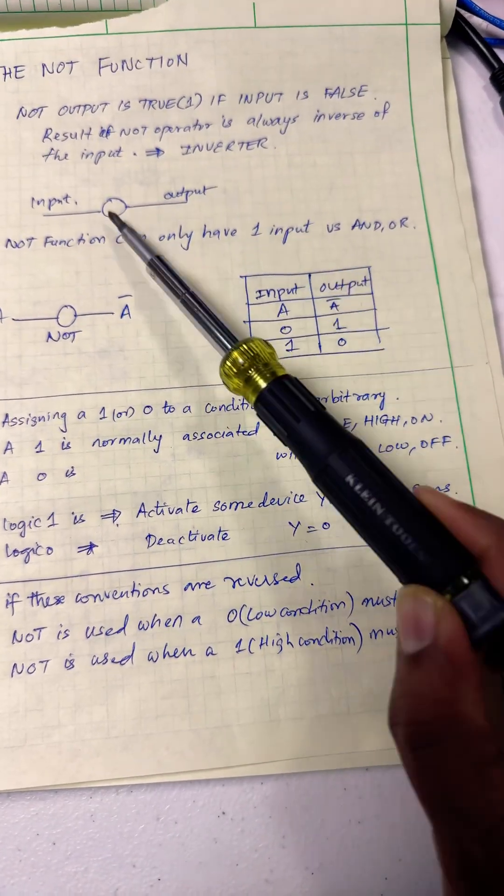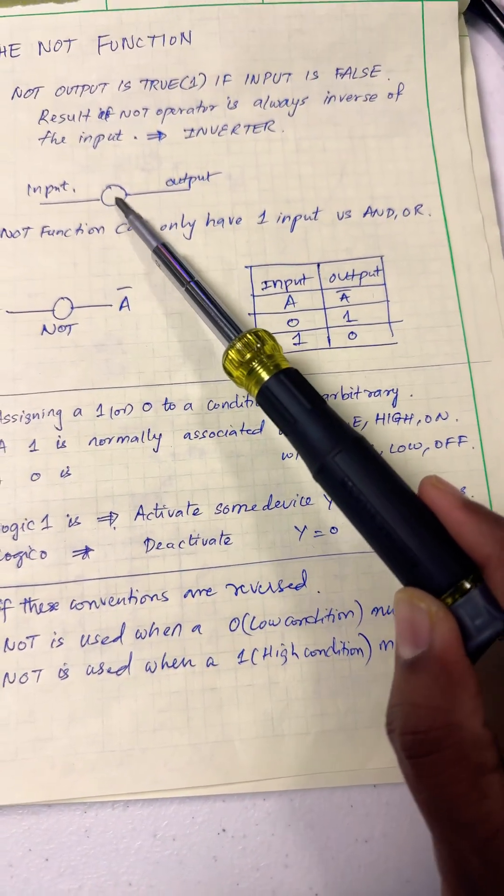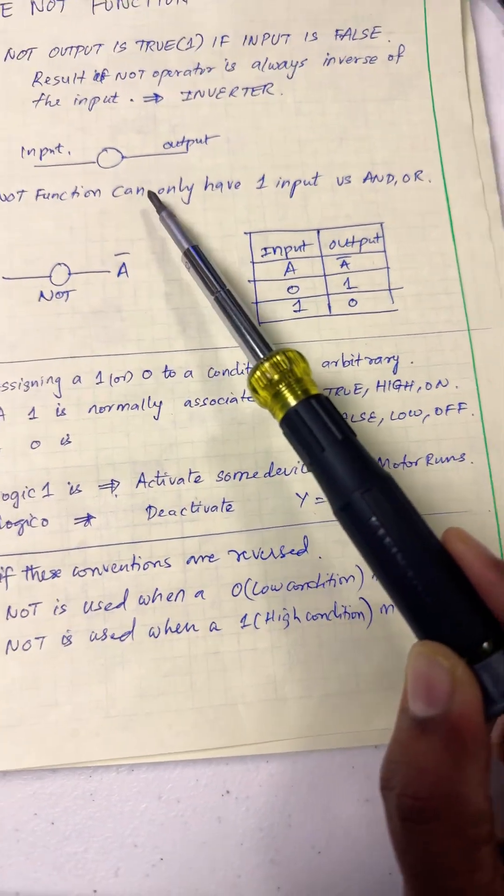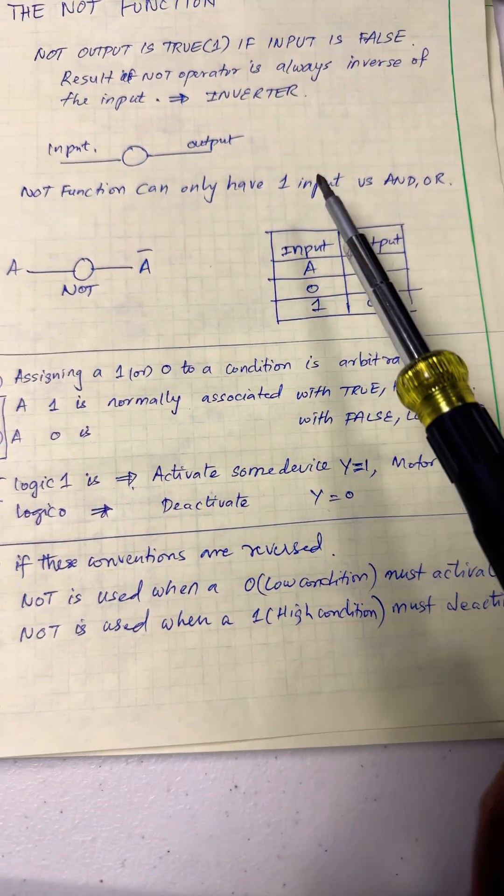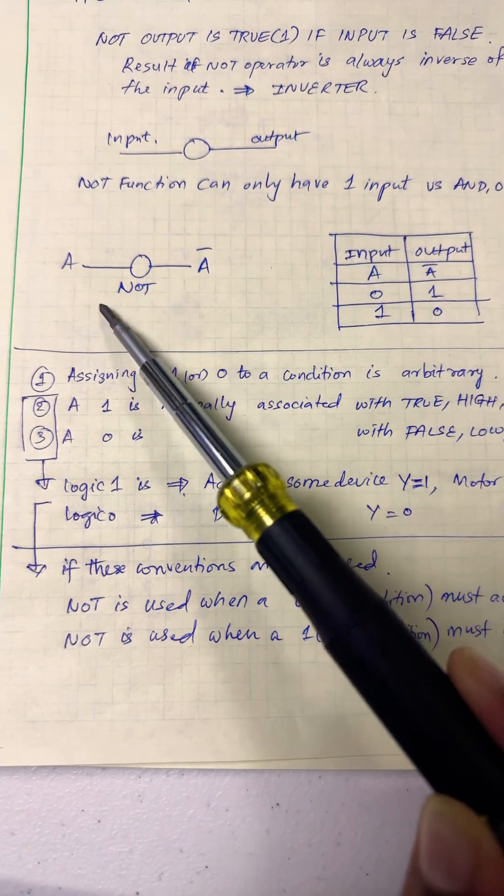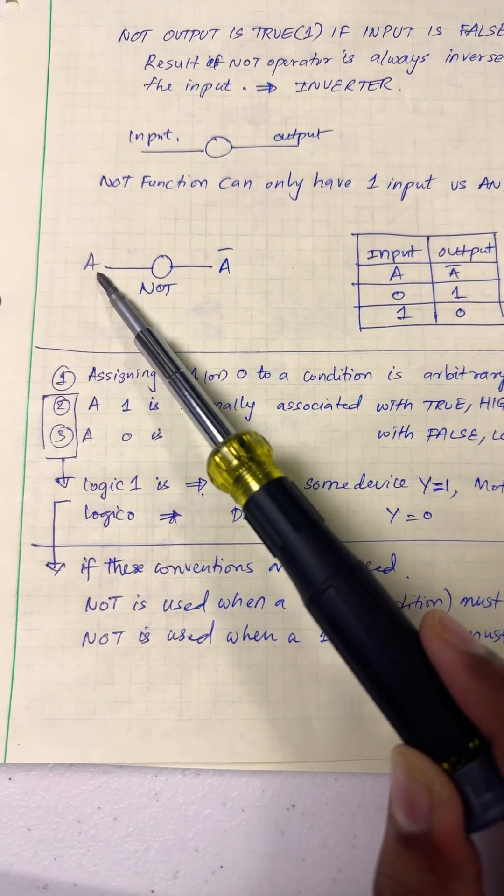The symbol used is a round circle with input and output. NOT function, unlike AND and OR, can only have one input. This is how we represent it: if input A goes to this NOT gate, it will come back as A bar.